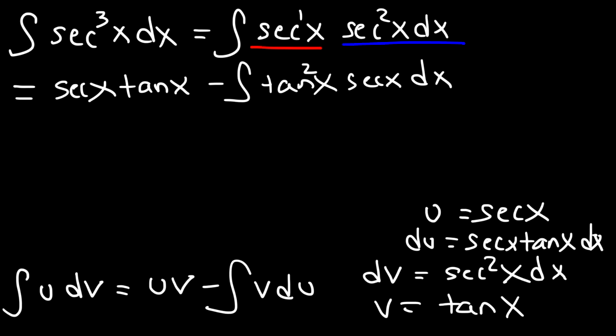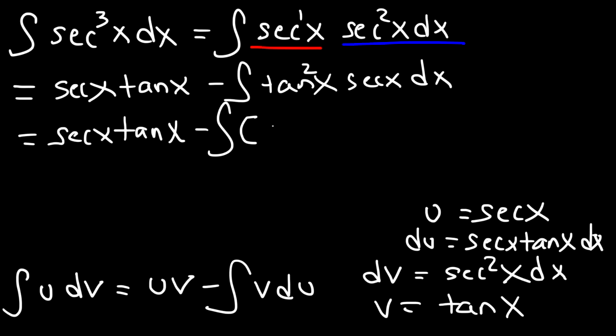At this point, you need to know that tangent squared equals secant squared minus 1. So let's replace tangent squared with that.